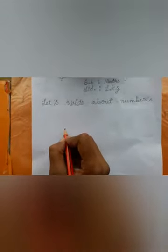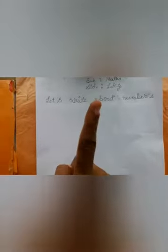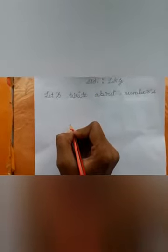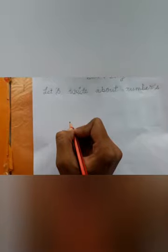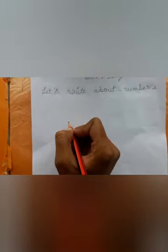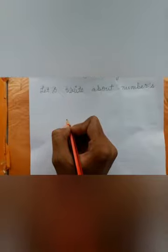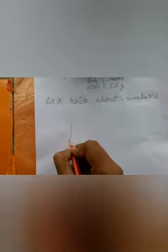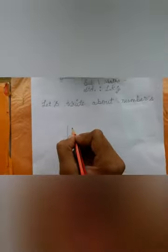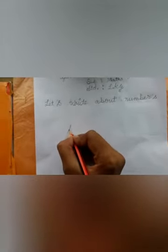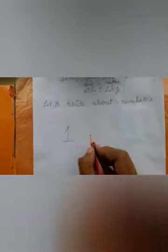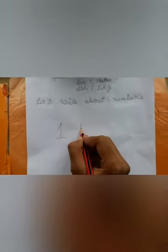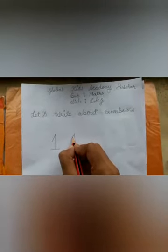We'll start with number 1. Now I will tell you how to make number 1. So please, let's see here. First of all, make a standing line, then a slanting line, and make a slanting line. Again, make a standing line, then a slanting line. This makes number 1.